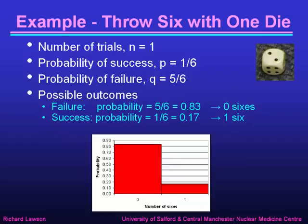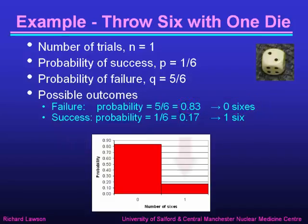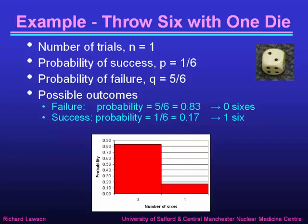If we plot the probability distribution for this result, we see that the bar for zero sixes has a probability of 0.83, and the bar for one six has a probability of 0.17. Those are the only results we can have if we're throwing one die. The area under this probability histogram adds up to one. This is the binomial distribution for n equals one and p equals 0.17.